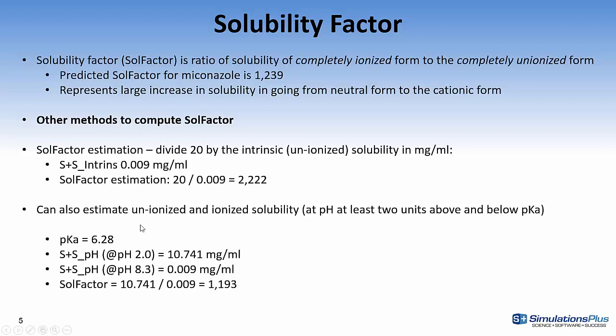Another way is simply to go into ADMET predictor and change the pH at which the solubility is predicted. If you go down to a very low pH where it's going to be predominantly in the ionized form you get a very high solubility. If you go above around 8.3 where the compound is unionized you're going to get a much lower solubility and that's a factor of 1000. This number is very close to the predicted solubility we would typically go with in GastroPlus.